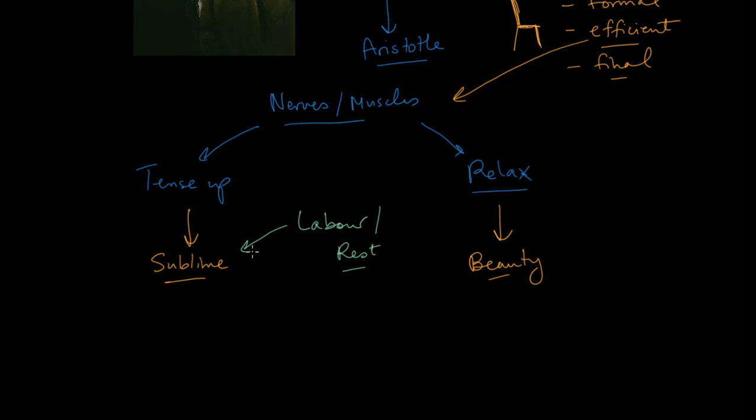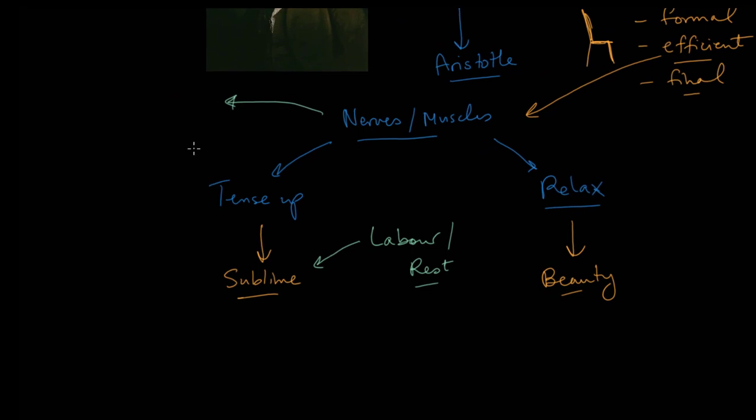So this is kind of the basic outline then of Burke's theory. There's one more thing that we should note before we jump to some examples, and that's the problem that, and this is a problem that Burke does not really resolve, it's the problem that this reaction to our environment might be either passive, it just happens to us, or it could be that we actually have self-control, that we can control our emotions and our muscles. Burke seems quite conflicted about this. Which one is it?